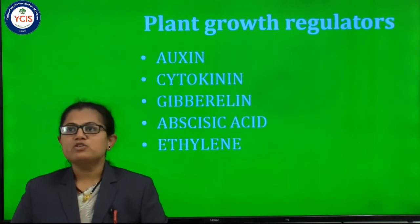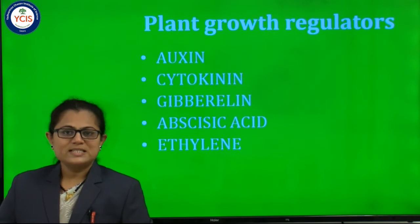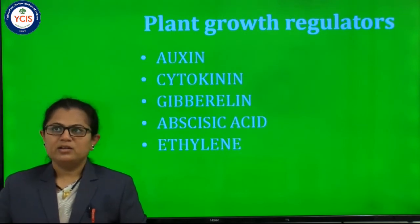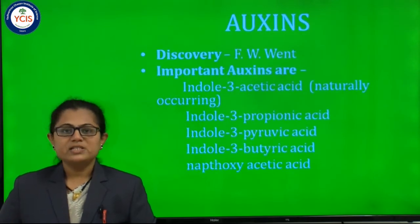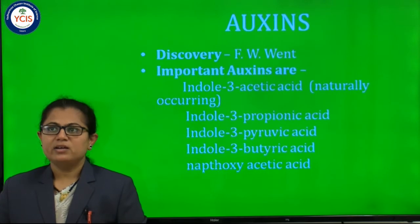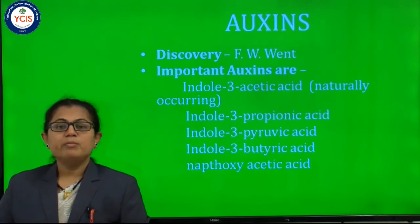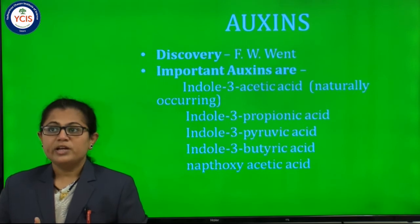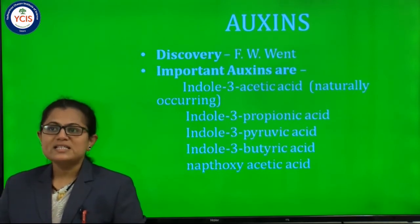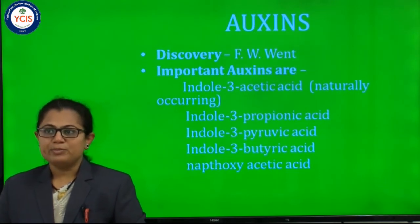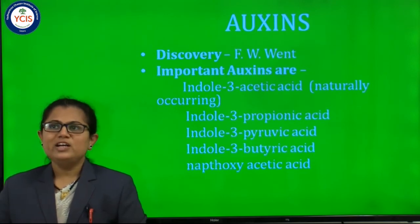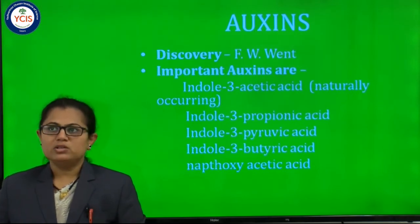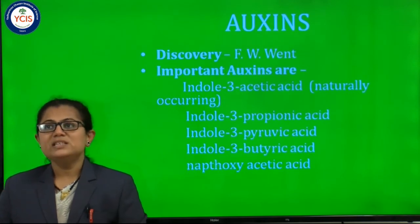There are five types of plant growth regulators: first, auxin; second, cytokinin; third, gibberellin; fourth, abscisic acid; and fifth, ethylene. We will see each one by one. First, auxin. Auxin was discovered by F.W. Went. There are a number of auxins. Some examples are: indole-3-acetic acid, indole-3-propionic acid, indole-3-pyruvic acid, indole-3-butyric acid, and naphthoxyacetic acid. Of all these, indole-3-acetic acid is the naturally occurring auxin in plants. The others are chemically or artificially prepared auxins.